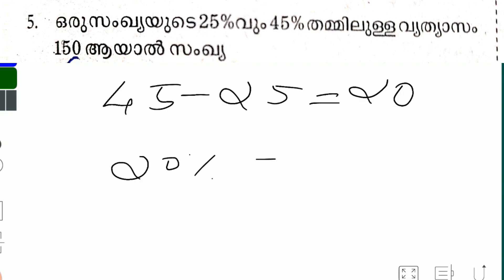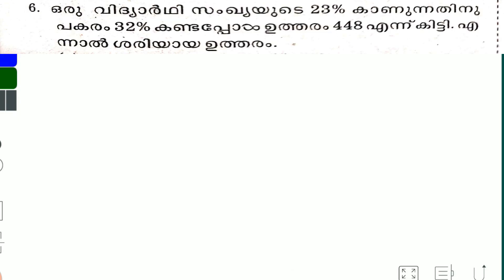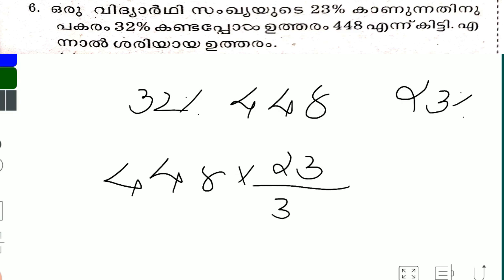Sangeet 20 sathamana is 180. 10 sathamana is 180; 180 is 75; 100 sathamana 790 — this is Sangeet. One sangeet: 23 sathamana, 32 sathamana, 34 sathamana. Sangeet 20 sathamana, 32 sathamana, 44 sathamana. 44 sathamana by 32.